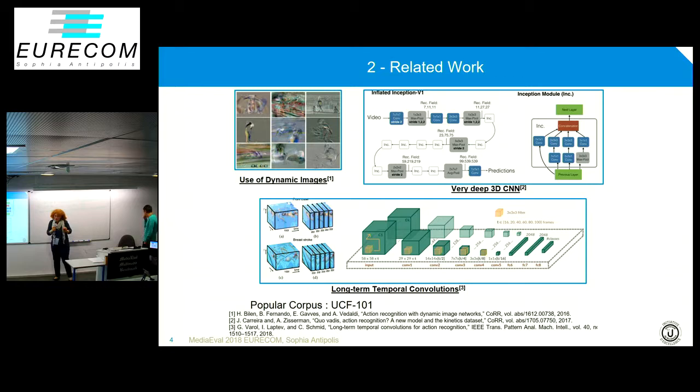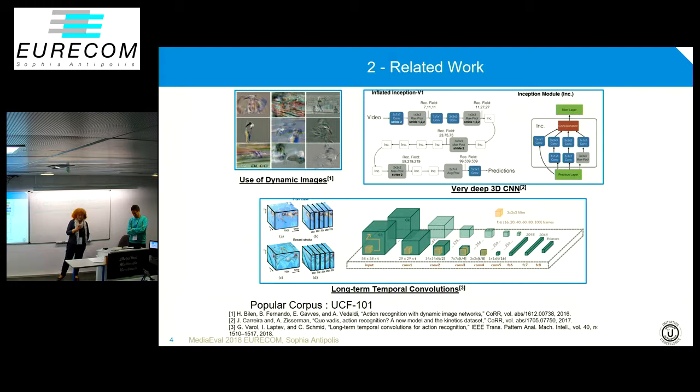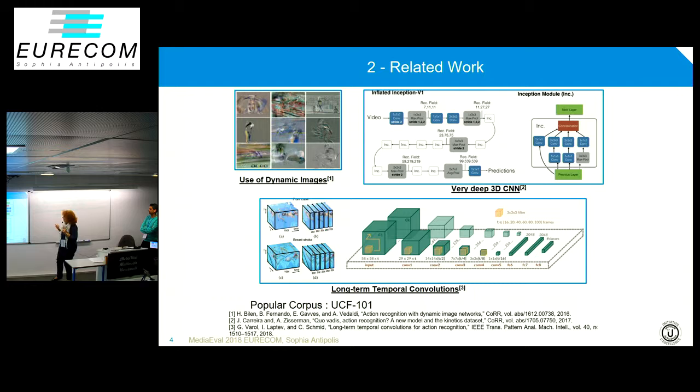Generally speaking, action recognition is one of the most researched tasks in computer vision today. Action recognition in sport is a further specialization of this task. There is a huge literature about it, and with the arrival of deep learning — deep CNNs and LSTMs — people are applying them to recognize different sport actions.